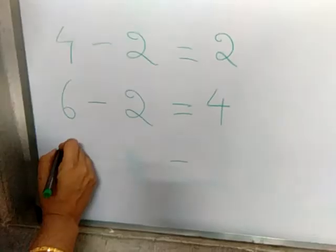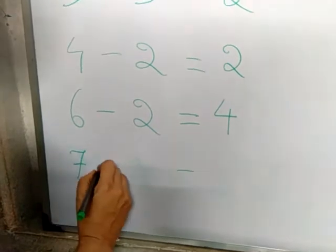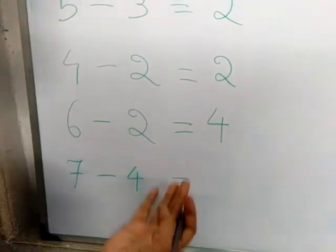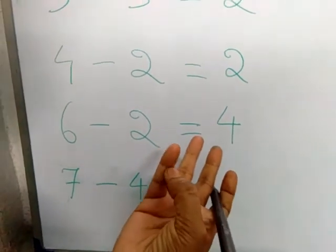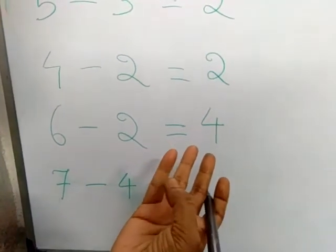The next is 7 minus 4. Start counting from 4. After 4, count 5, 6, 7. Count 1, 2, 3.